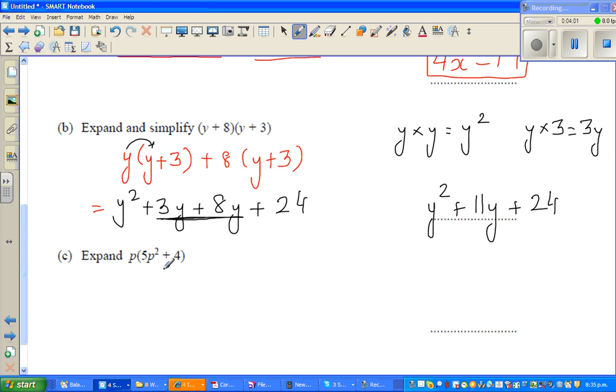Can we do one more? Expand this. So this is pretty easy. p times 5p is 5p cubed. p times p squared is p cubed. And p times 4 is 4p. So the answer is 5p cubed plus 4p.